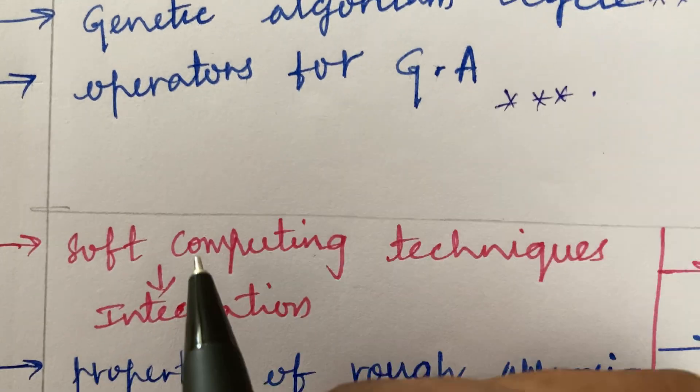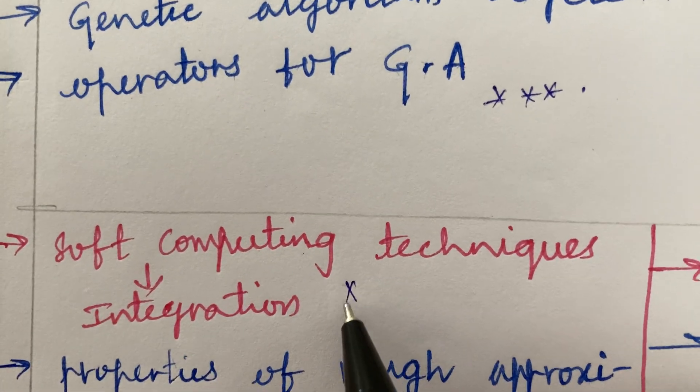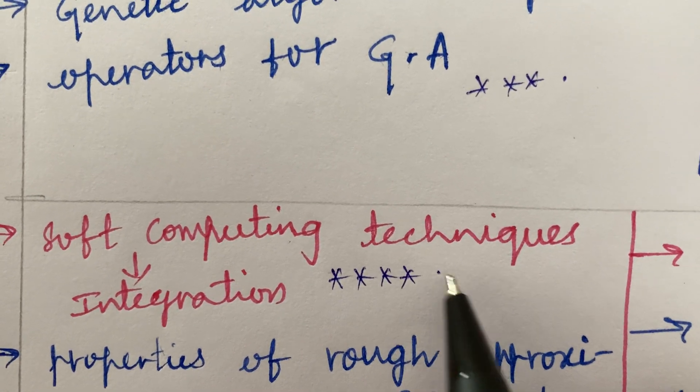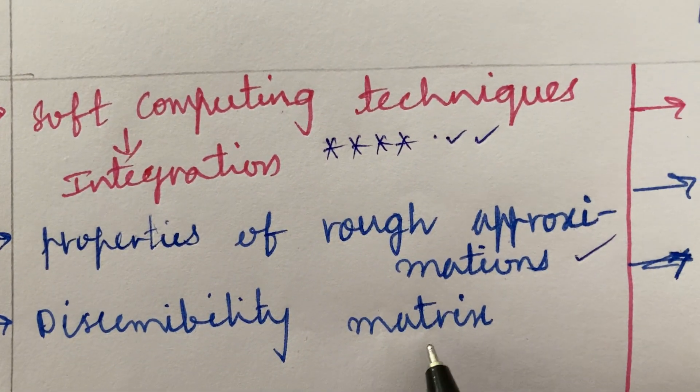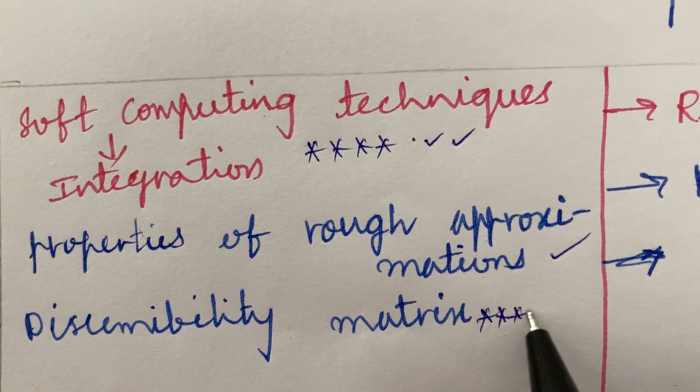Later, the soft computing techniques, I mean the integration of soft computing techniques is also said to be a 10 mark question directly. The properties of rough approximations and discernibility matrix is also said to be a topmost question.